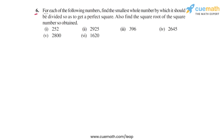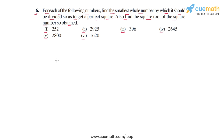In question 6, the problem statement says: for each of the following numbers, find the smallest whole number by which it should be divided so as to get a perfect square. Also, find the square root of the square number so obtained. We have 6 numbers: 252, 2925, 396, 2645, 2800, and 1620. For each of these numbers, we have to find the smallest whole number by which we can divide so that it turns into a perfect square, then find the square root. We will prime factorize each number to determine the number by which to divide.